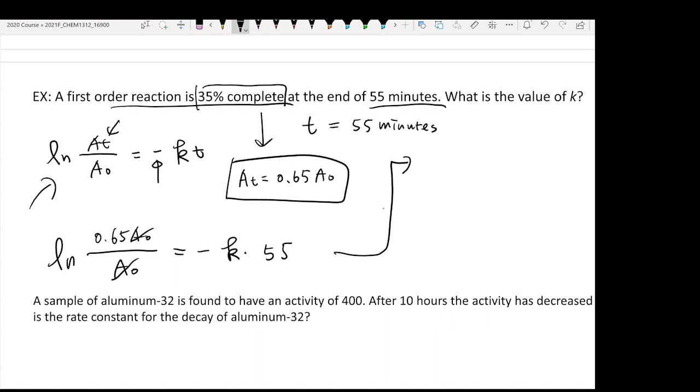By doing this calculation, your k is going to equal negative natural log 0.65 divided by 55, and you're going to get a value of 7.8 times 10 to the negative 3 per minute.